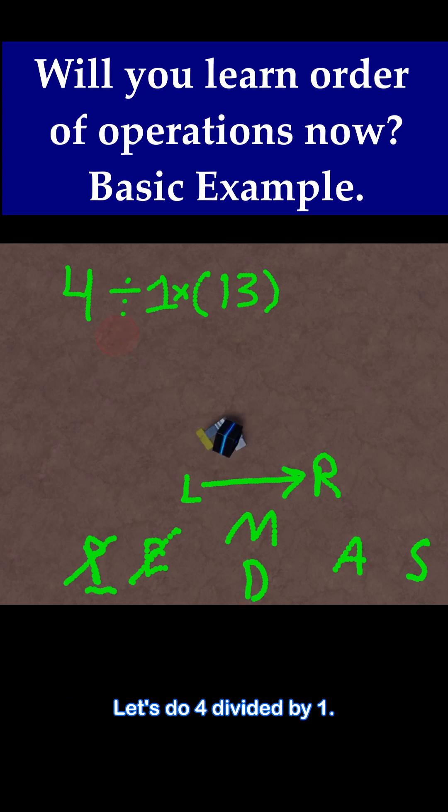Let's do 4 divided by 1. Well, 4 divided by 1, that's just 4. So I'm going to say do this first. And that's 4. And then carry over the times 13.